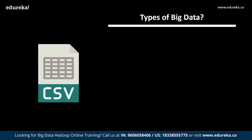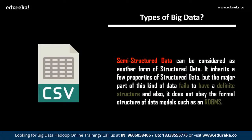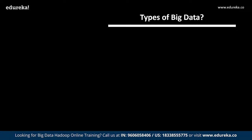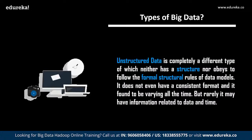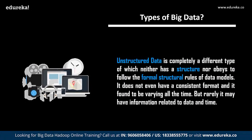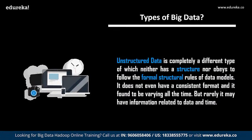Followed by that, we have semi-structured data. Semi-structured data can be considered as another form of structured data. It inherits a few properties from structured data, but the major part of this kind of data fails to have a definite structure and does not obey the formal structure of data models such as an RDBMS. A very common example of semi-structured data is a CSV or comma-separated file. Followed by this, we have unstructured data, which is completely different — it neither has a structure nor obeys formal structural rules of data models.